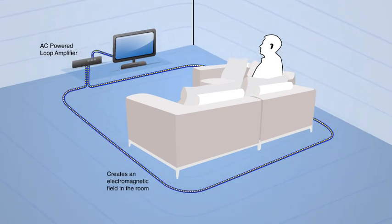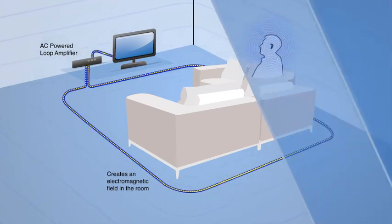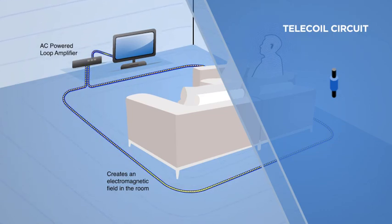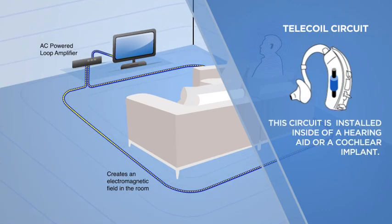This electromagnetic field induces an electrical current in a special circuit called a telecoil. A telecoil consists of copper wire wrapped around a small metal rod. This circuit is installed inside of a hearing aid or a cochlear implant.